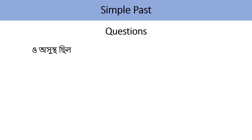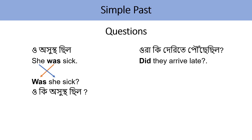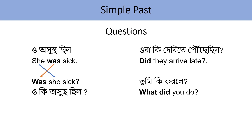ও অসুস্থ ছিল — She was sick. When I ask this as a question: Was she sick? Notice 'she' moves after 'was' in question form. Was she sick? Always remember: when forming questions, 'was', 'were', or question words like 'what', 'when' come first. ওরা কি দেরিতে পৌঁছেছিল? — Did they arrive late? তুমি কী করলে? — What did you do? 'Did' moves to the front for questions.